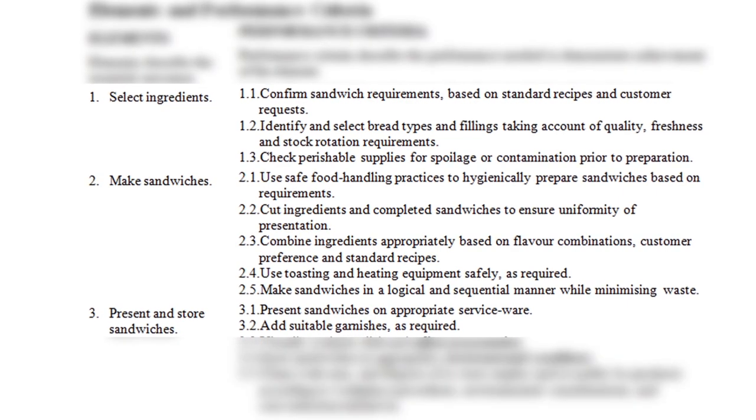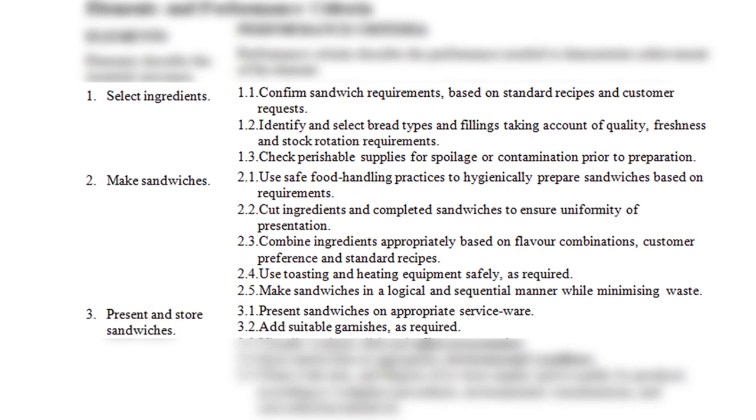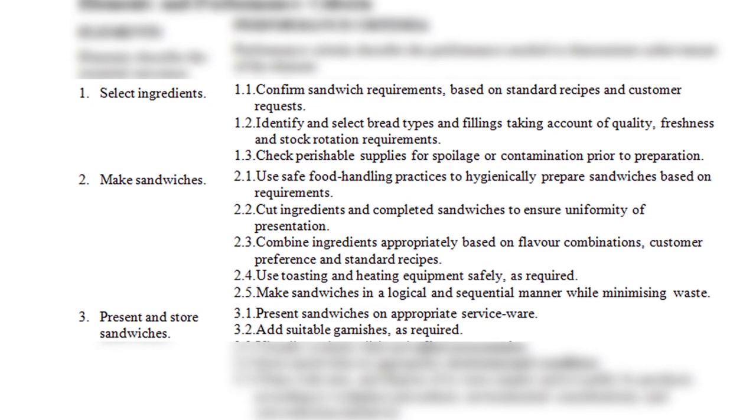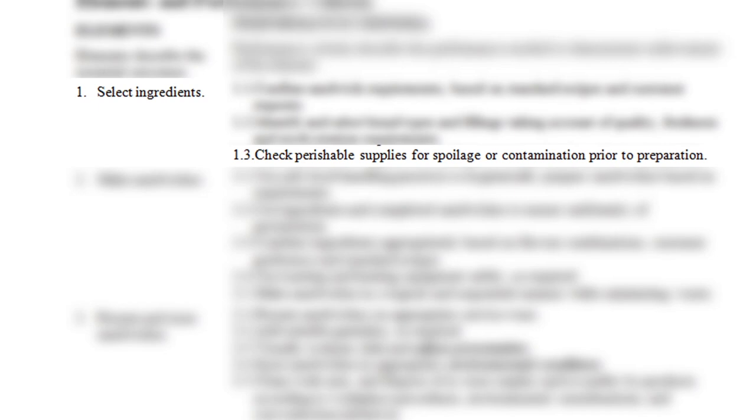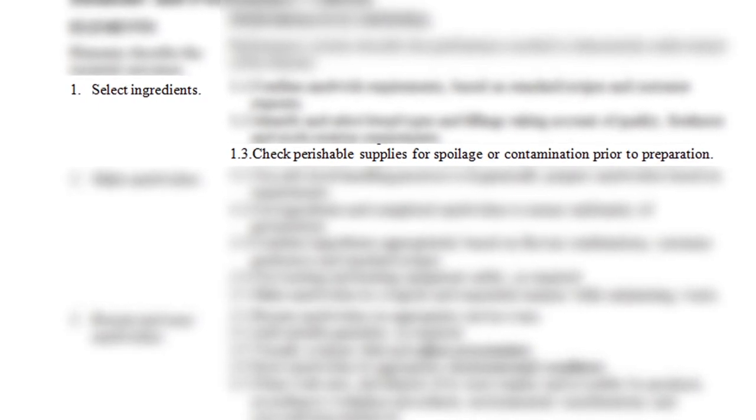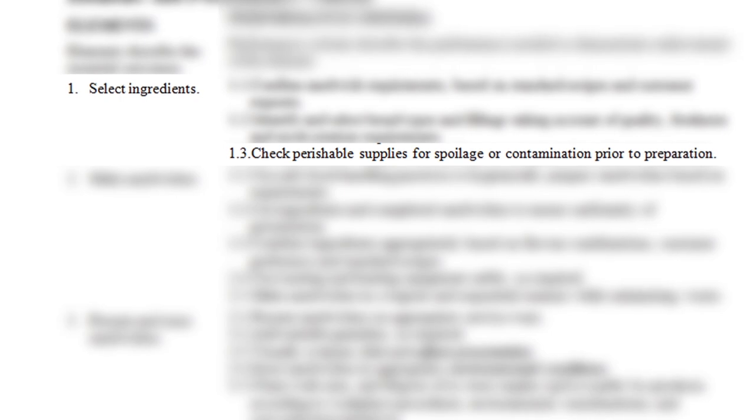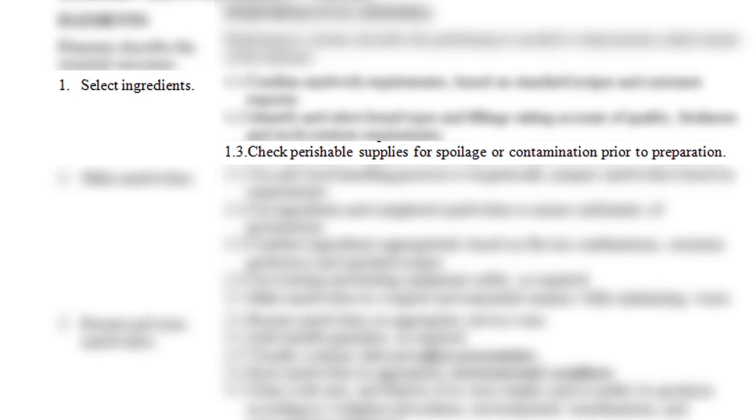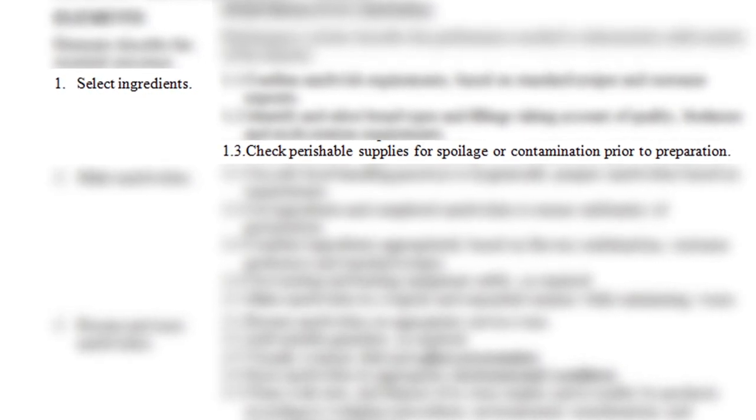Each PC statement may contain skills and or knowledge components that are assessed using different methods and tools. In our example, the first element is select ingredients and performance criteria 1.3 is to check perishable supplies for spoilage or contamination prior to preparation. This sounds simple, but when you unpack it, it's more complex.